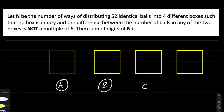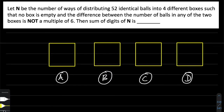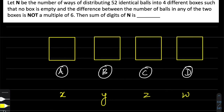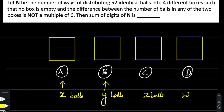Let boxes be A, B, C, D and let X, Y, Z, and W be the number of balls that go inside these boxes. So X balls are going in A, Y balls are going in B, Z balls are going in C, and W balls are going in box D.